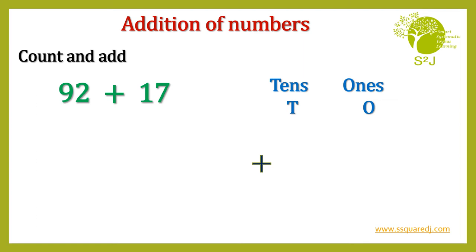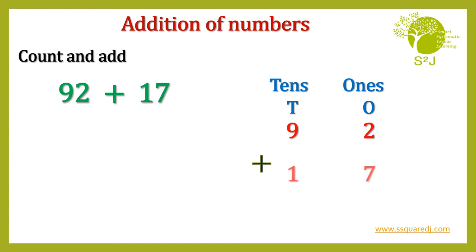92 plus 17. Let's arrange them vertically. So 92 — 2 in 1's place and 9 in 10's place. Let's arrange 17. 7 in 1's place and 1 in 10's place.